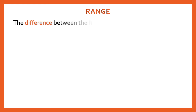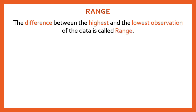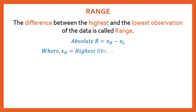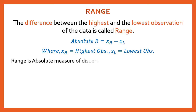Range is one of the easiest measures of dispersion. The difference between the highest and the lowest observation of the data is called Range. The absolute range is calculated as XH minus XL — where XH is the highest observation and XL is the lowest. Range is an absolute measure of dispersion, expressed in the same units as the observations.